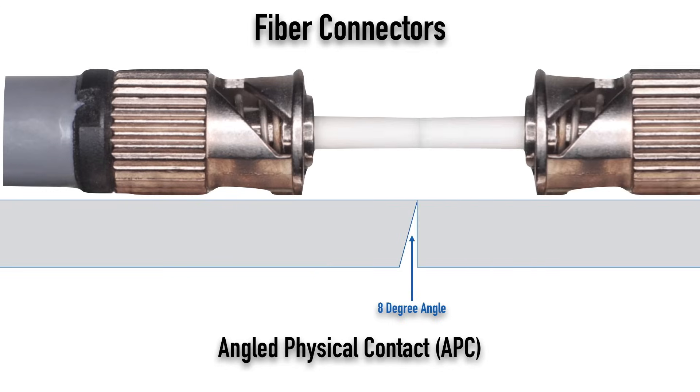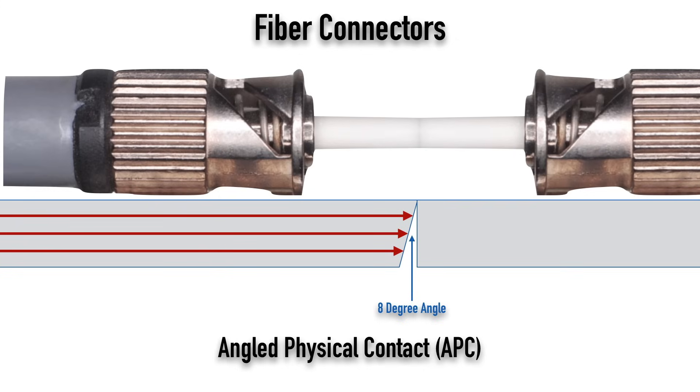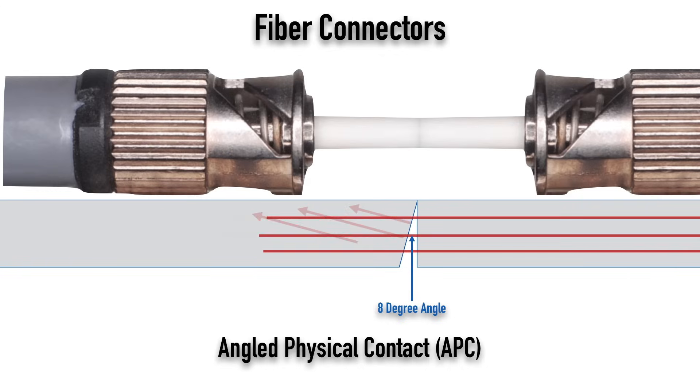some people prefer to use an APC, which is an angled physical contact. Here, when we put these connectors together, they don't completely touch. It's not a flat surface meeting a flat surface. There's actually an 8-degree angle between these. And this is called, again, an angled physical contact. And the idea is, the tiny bit of reflection that we get is not going to go straight back and damage the optical source. It's going to be dissipated in the cladding of the fiber.